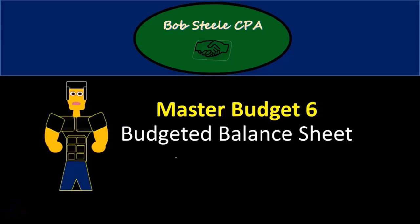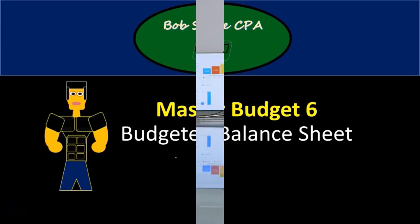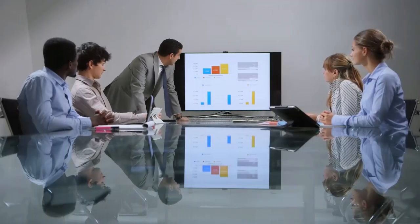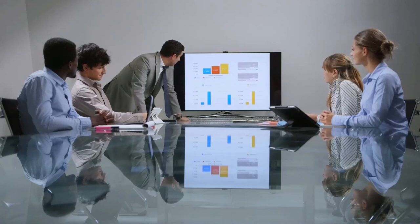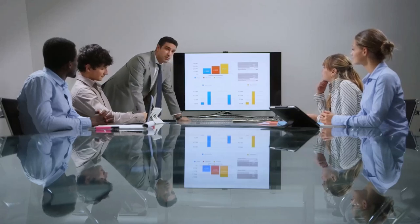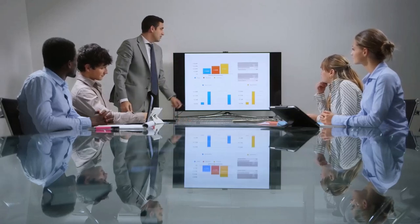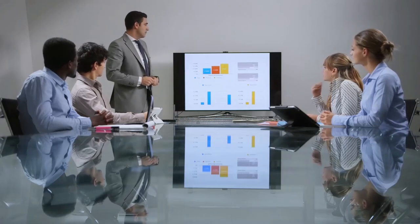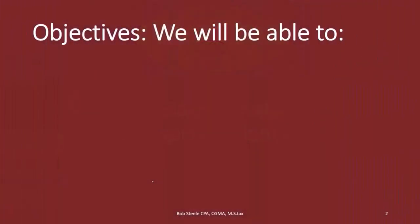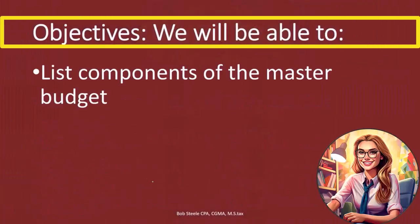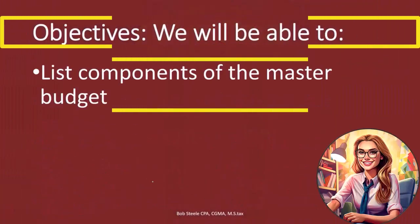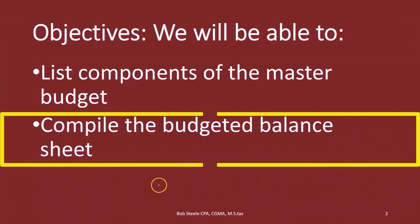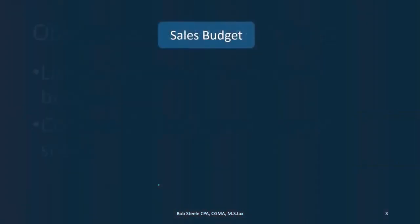Hello. In this lecture we're going to look at the Master Budget Part 6: Budgeted Balance Sheet. If you haven't taken a look at the other five, you might want to take a look at those first because we will be using components of those in order to compile the balance sheet. At the end of this, we will be able to list components of the master budget and compile the budgeted balance sheet.